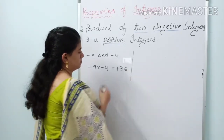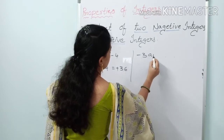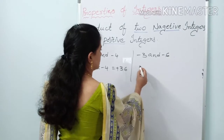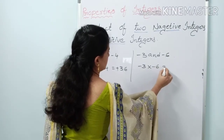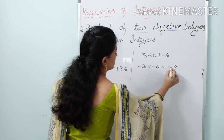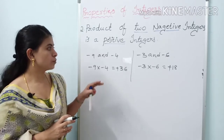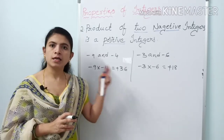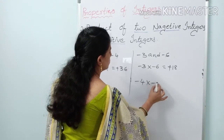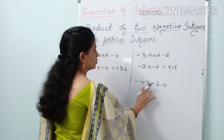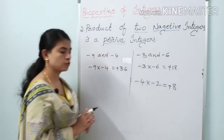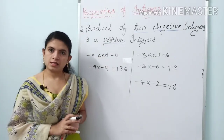Another example: minus 3 and minus 6 — both negative integers. Applying multiplication: minus 3 into minus 6 equals 18. Minus into minus gives plus. Next: minus 4 into minus 2 equals 8. Minus into minus gives plus. The product of two negative integers is positive.